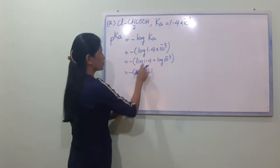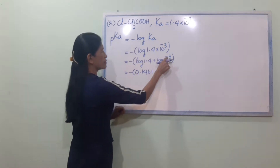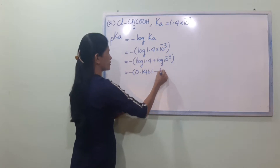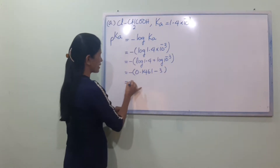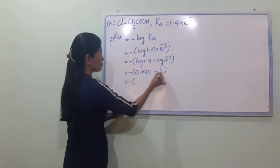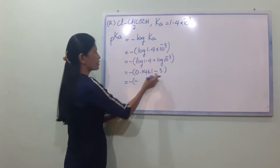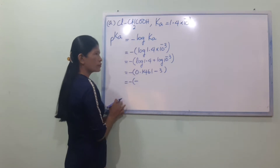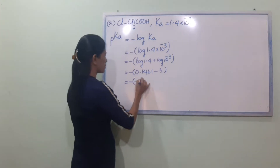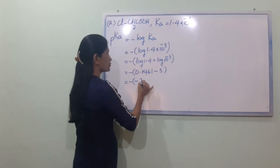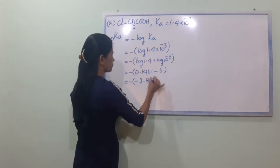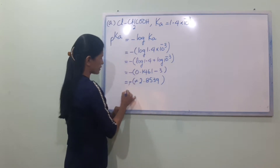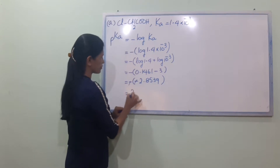It is equal to 1.4, 0.4. When you write minus 3 in the middle, minus 3 gives us 0.141. On the left, 2.8539 is equal.